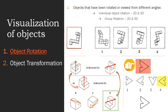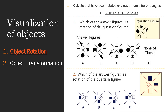Now let's move to group rotation with a few examples. The first question asks: which of the answer figures is the rotation of the question figure? We have four different shapes in the question figure and we have to remember these four shapes and their locations relative to each other. For example, if you take the arrow mark, you should remember that at the bottom of the arrow mark there is an unshaded square.